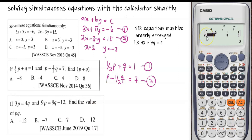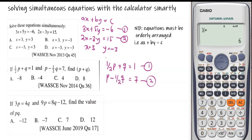For equation 2, the coefficient of p is 1 — press equal; the coefficient of q is negative ½ — press equal; the true constant is 7 — press equal. The answers are displayed: p equals 6 and q equals negative 2. Since the question asks for p plus q, it is 6 plus negative 2 which gives an answer of 4.